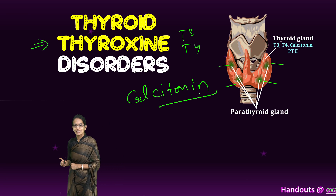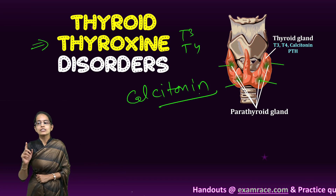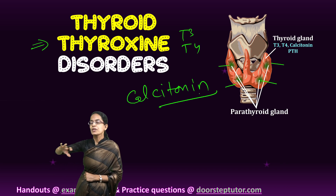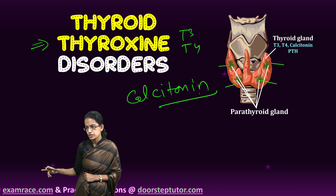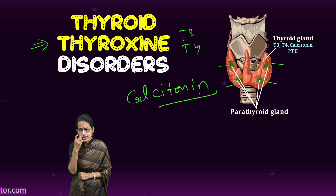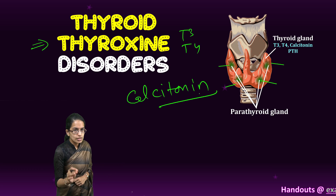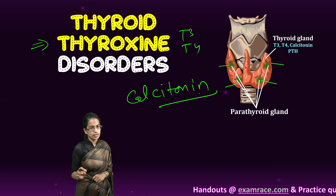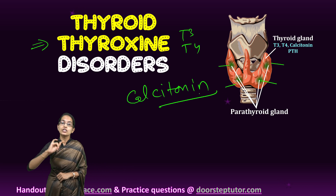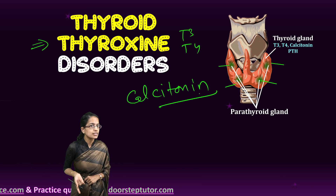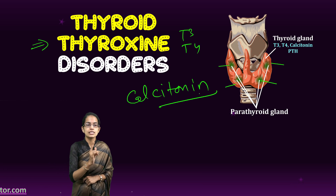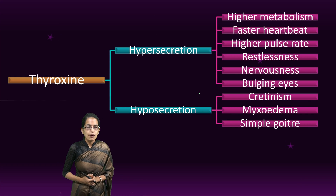Thyroxine regulates growth, metabolism, and development, and also regulates basal metabolism — that is, cellular oxidation — and therefore acts as the body's thermostat. The secretions of thyroxine are controlled by the master gland of the body, which is the pituitary gland.